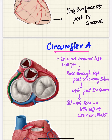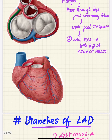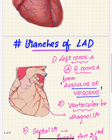The circumflex artery winds around the left margin, passes through the posterior coronary sulcus on the left side up to the posterior interventricular groove, and performs anastomosis with the right coronary artery, a little to the left of the crux of the heart.